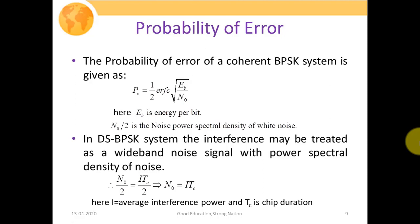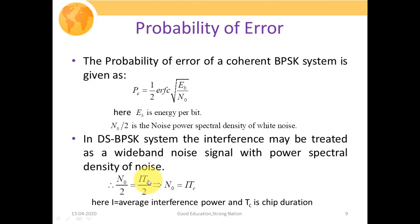Therefore, N0/2 = I × TC / 2, which implies N0 = I × TC, where I is the average interference power. This is because the noise power spectral density is the ratio of noise power to the bandwidth of the signal, and the bandwidth of the spread signal equals 1/TC. So the final expression for noise power spectral density is N0 = I × TC, where TC is the chip duration.